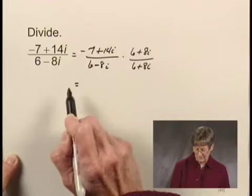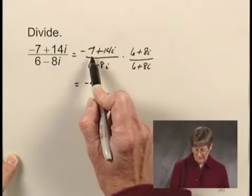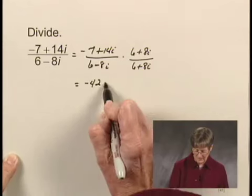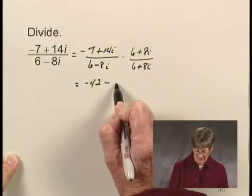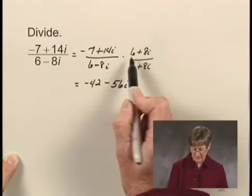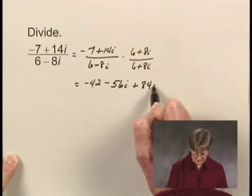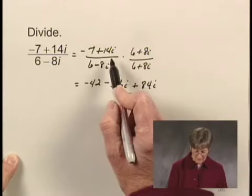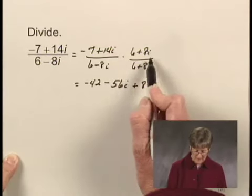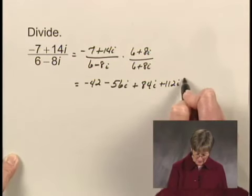I'm going to use FOIL in the numerator. Negative 7 times 6 is negative 42. Then I have negative 7 times 8i, which is negative 56i. 14i times 6 is 84i, so I have plus 84i. And 14i times 8i is 112i squared.